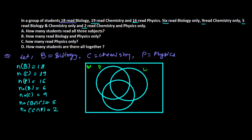We label the universal set as all students, with circles for physics, chemistry, and biology. We start by filling in the 'only' sections. Biology only is 6, chemistry only is 9. Biology and chemistry only — meaning this intersection region, excluding physics — is 5. Chemistry and physics only — this region, excluding biology — is 2. We do not include the center region, where students study all three subjects, in these 'only' categories.